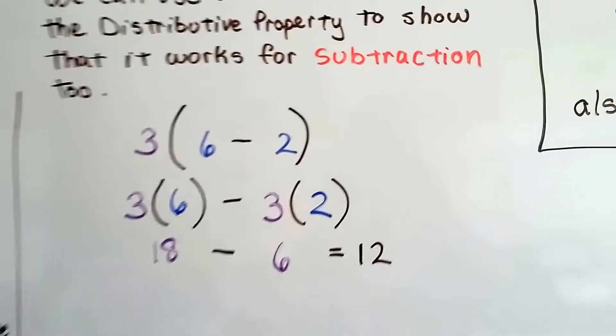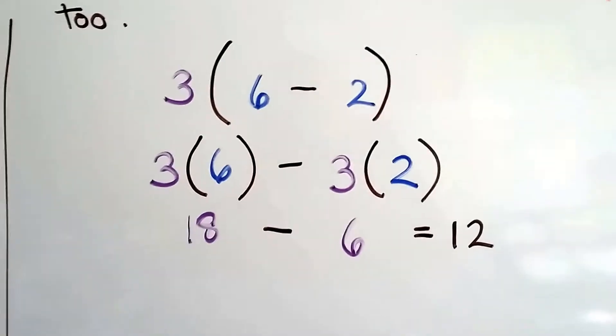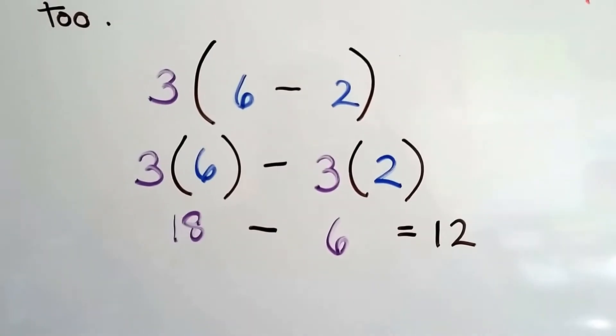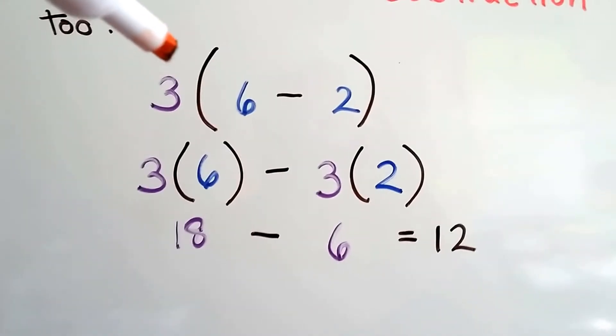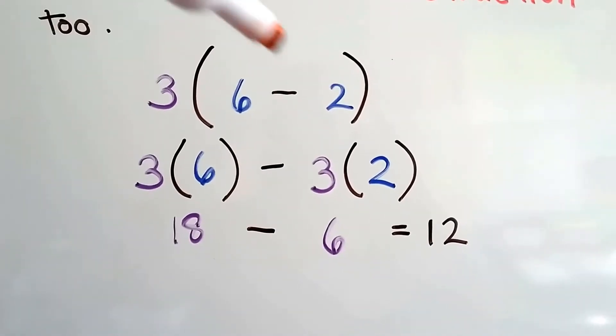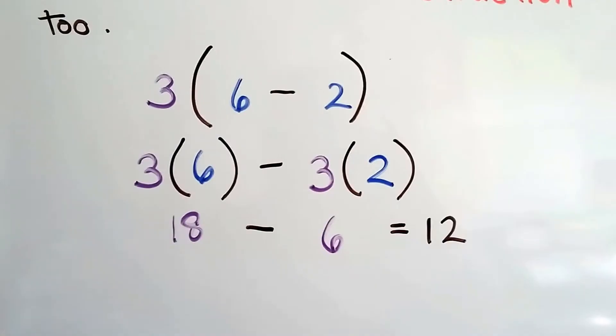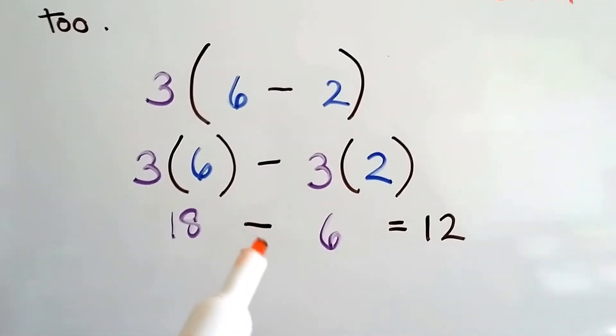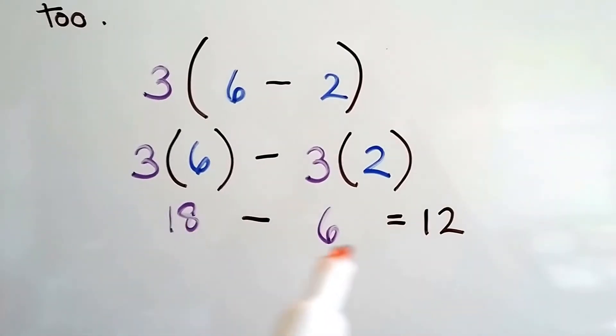So let's take a look at what happens when we've got some numbers with subtraction in the parentheses. We just distribute this purple 3 to the blue numbers. 3 times 6 minus 3 times 2. 3 times 6 is 18 minus 3 times 2 is 6. 18 minus 6 is 12.